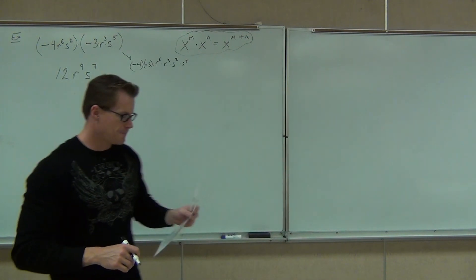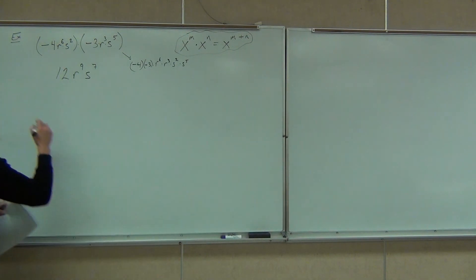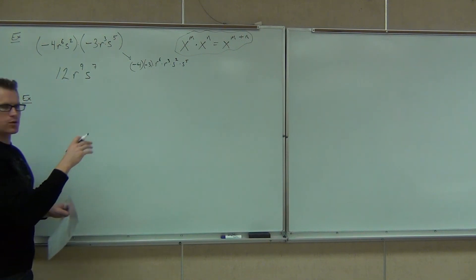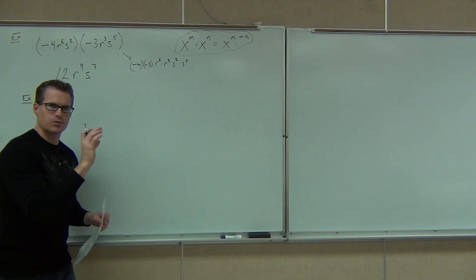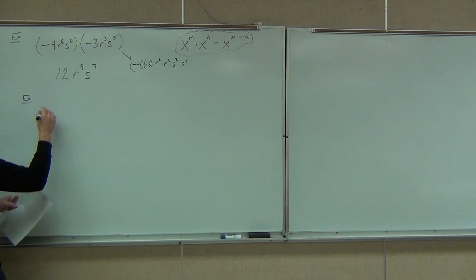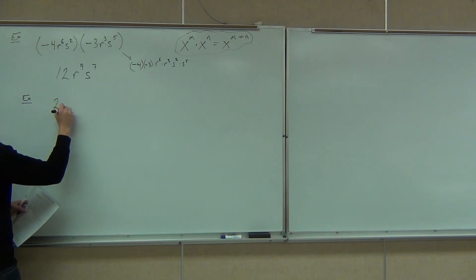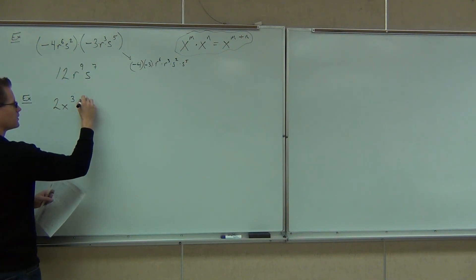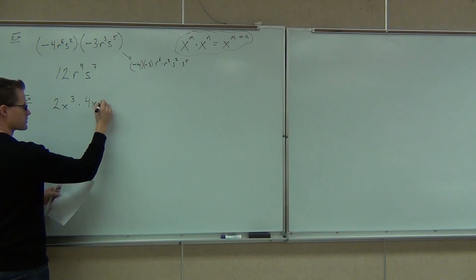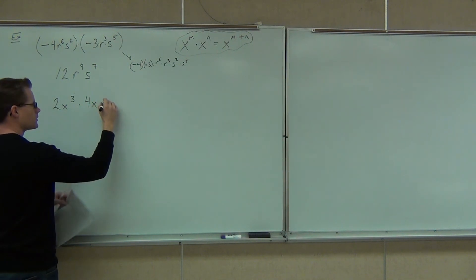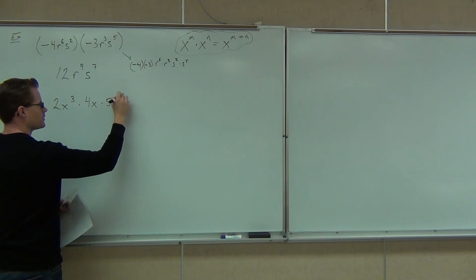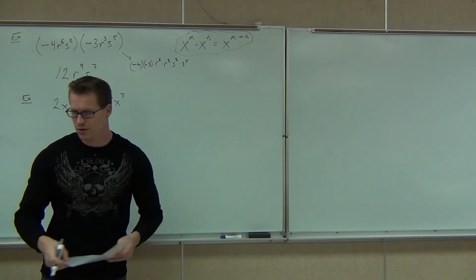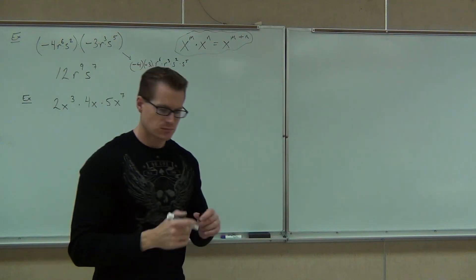Now let's see if we can extend this concept to more than just a couple items being multiplied together. For instance: 2x to the 3rd times 4x times 5x to the 7th.